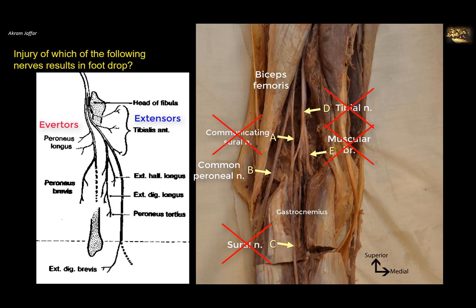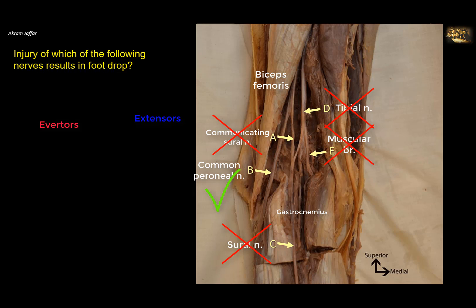It is these anterior compartment muscles — when paralyzed — that result in foot drop. If the common peroneal nerve itself is affected, then the muscles of the lateral compartment, peroneus longus and brevis, which are supplied by the superficial peroneal nerve, are also affected. This results in inversion at the ankle because peroneus longus and brevis are everters. So the correct answer is B — the common peroneal nerve — whose injury results in foot drop.